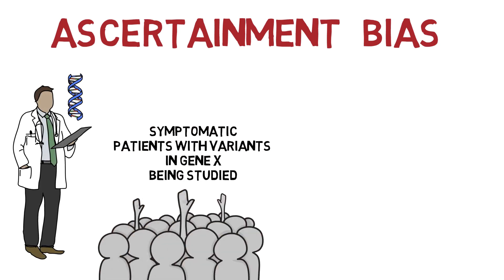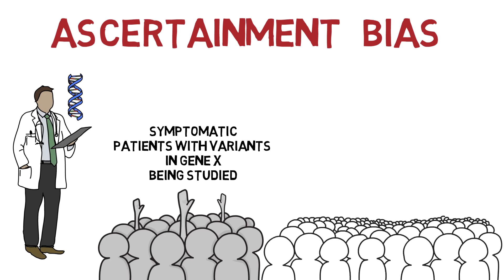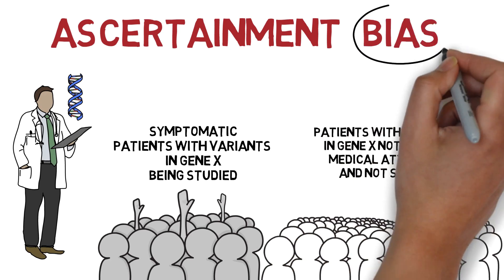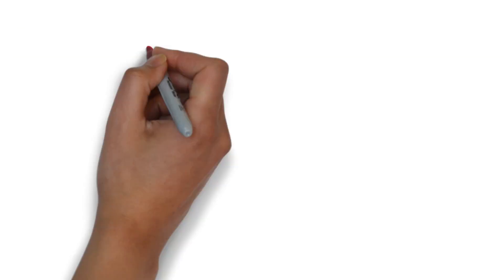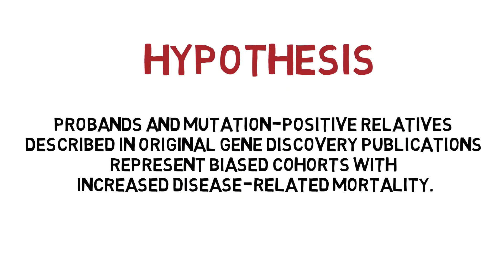Without publication of subsequent genetic cascade screening — the process by which other probands and relatives are phenotyped to provide extended data — we may have underestimates of survival rates for inherited cardiac diseases. The authors therefore hypothesized that probands and mutation-positive relatives described in original gene discovery publications represent biased cohorts with increased disease-related mortality.